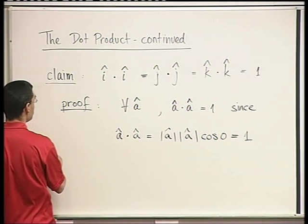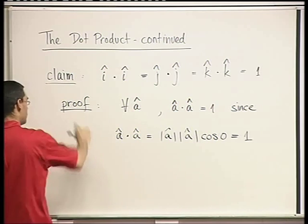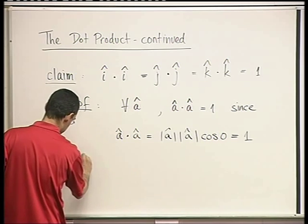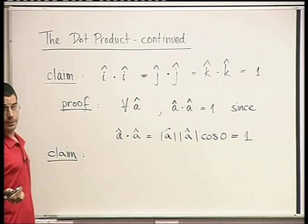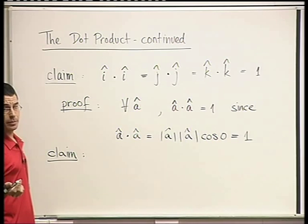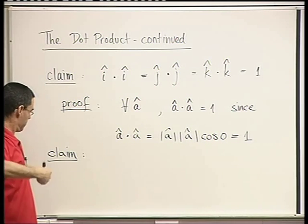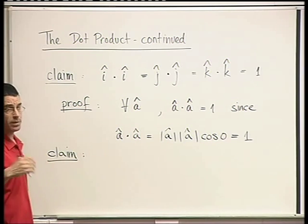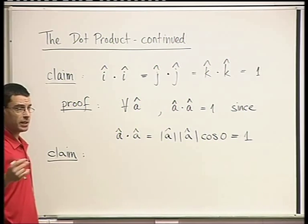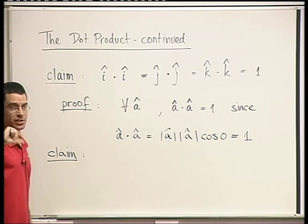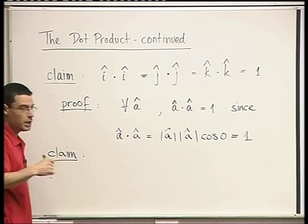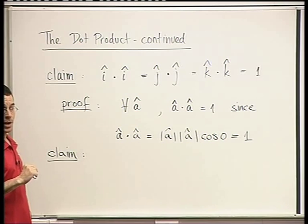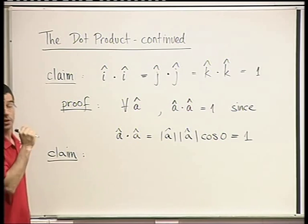Part two of the same claim. A claim is just a different word for a theorem — there are many words for theorems. The fancy big word is theorem, but you'll sometimes see claim, proposition, or lemma. They're all words for the same thing, with size implicit in them. You wouldn't call this a theorem — that's paying too much respect to it — so you call it a claim or a lemma, which is kind of a small theorem.